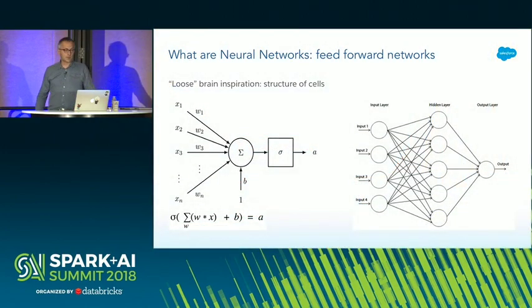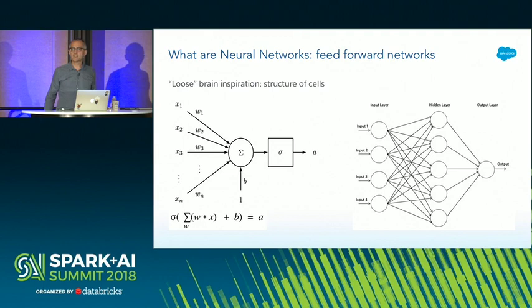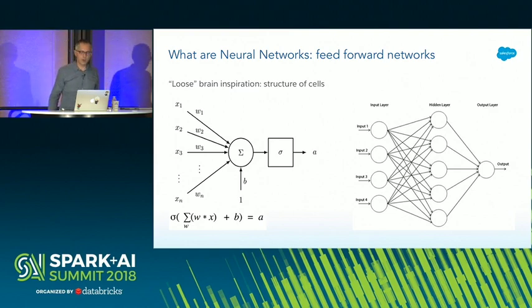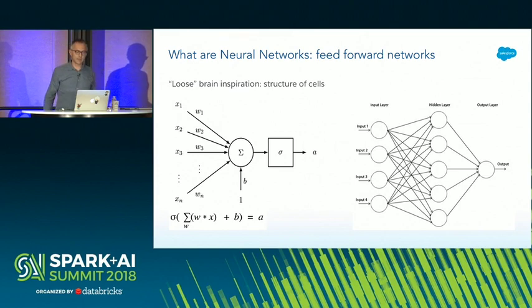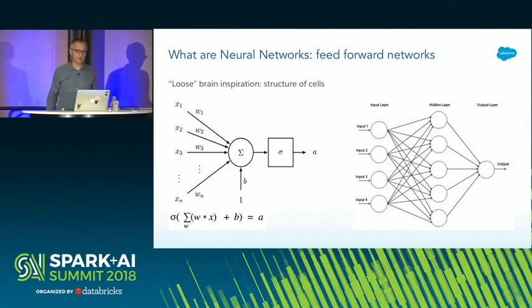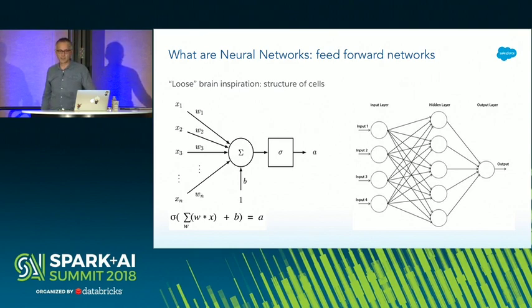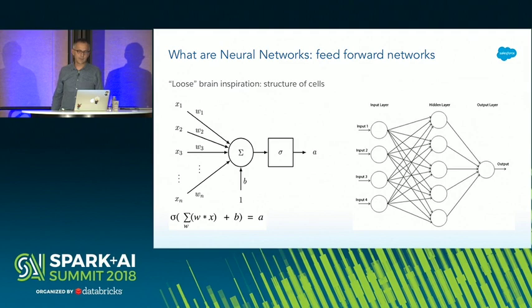Neural networks are based on loose brain inspiration: a model structure of cells composing layers, where each cell is a classifier and the activation of each layer is passed on to the next. You can see a cell where x is an input example, w are the weights that filter inputs, and a is the activation of the hidden layer. To the right is a simple feedforward network with a single hidden layer. The input represents features, while the output represents a labeled class such as scheduling request. In a feedforward network, information is fed straight through — it never touches nodes twice.